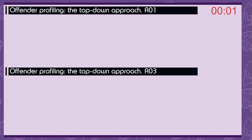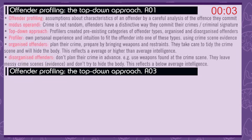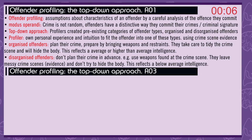Offender profiling — the top-down approach. Offender profiling: assumptions about the characteristics of an offender are made by careful analysis of the offences they commit. A modus operandi — crime is not random. Offenders have a very distinctive way that they commit their crimes, also known as a criminal signature. The top-down approach involves profilers creating pre-existing categories of offender types: organised and disorganised offenders. The profiler uses their own personal experience and intuition to fit the offender into one of these types using crime scene evidence.